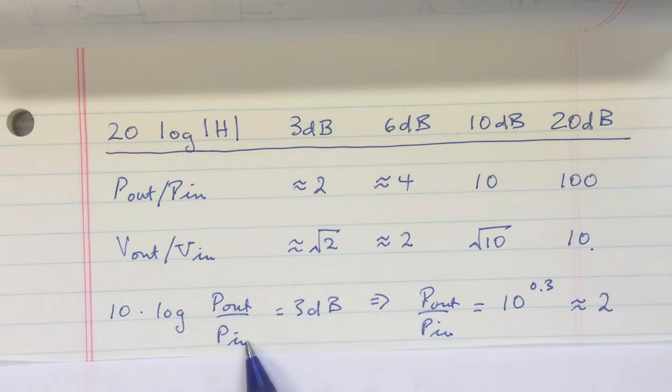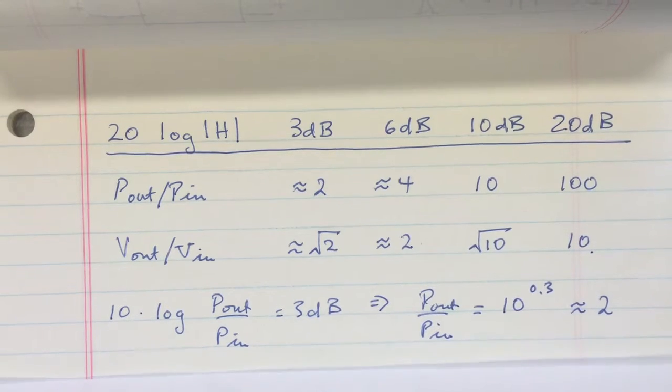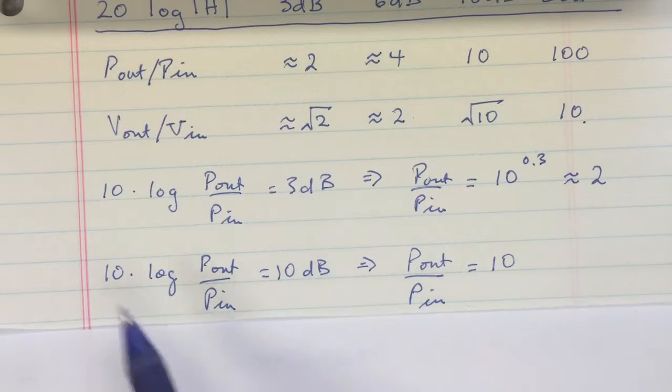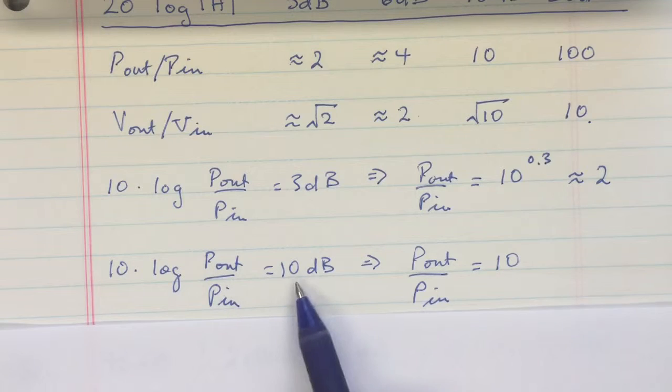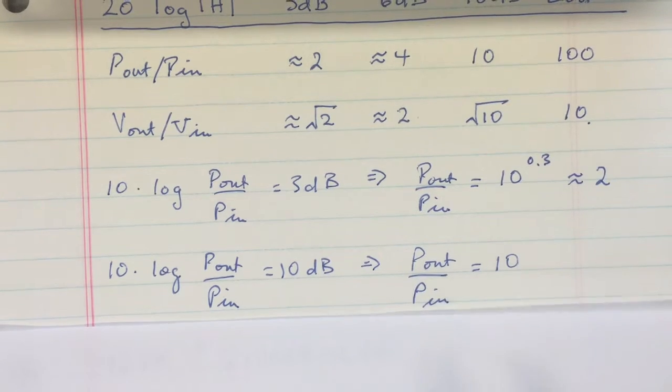And you can calculate each of these quite simply by just saying, look, ten times the log of the power ratio is three decibels. Divide both sides by ten, and you'll get the log of the power ratio is 0.3. So the power ratio is 10^0.3, which is approximately two. Similarly, ten times the log of the power ratio is ten dB. Divide by ten both sides, you just get the log of the power ratio is one. So that means the power ratio is ten.